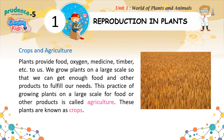Crops and Agriculture: plants provide food, oxygen, medicine, timber, and more to us. We grow plants on a large scale so that we can get enough food and other products to fulfill our needs. This practice of growing plants on a large scale for food or other products is called agriculture. These plants are known as crops.